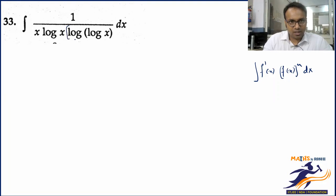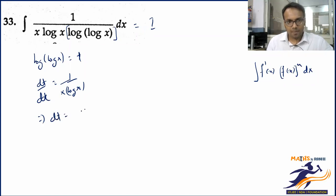Log of log of x ko aapne t liya hai, so dt/dx kya ho jayega? Aap yahan chain rule lagayenge na, pehle to 1/log x aayega aur uske baad log x to 1/x ho jayega. So dt can be dx/(x log x). Yeh expression tumhare paas available hai yanki iski jagah pe tum straight away kya rakhoge, dt.